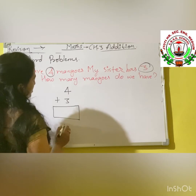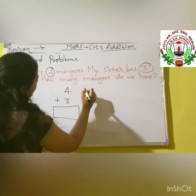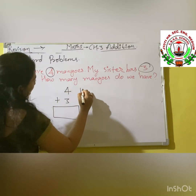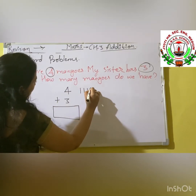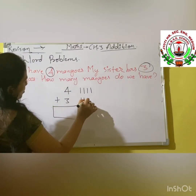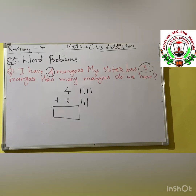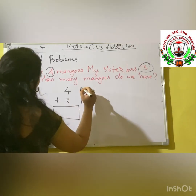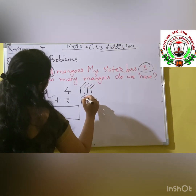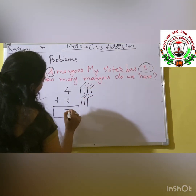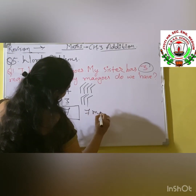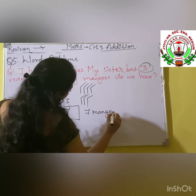So we write 4 plus 3. We draw 4 strokes: 1, 2, 3, 4. Then we draw 3 strokes: 1, 2, 3. Now we count all together: 1, 2, 3, 4, 5, 6, 7. Our answer is 7. So we are having 7 mangoes with us.